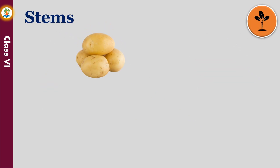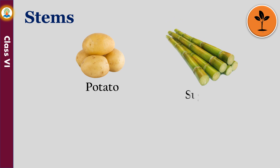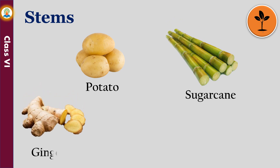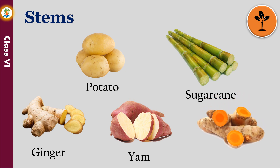Potato, sugarcane, ginger, yam, and turmeric are modified stems that grow underground.